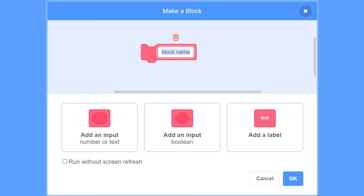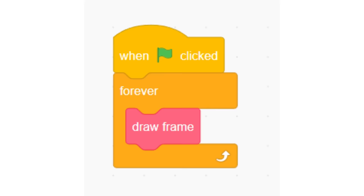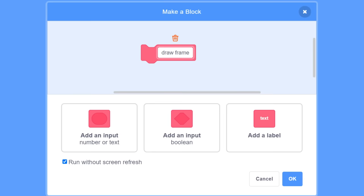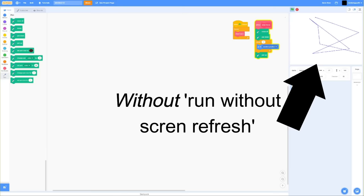The first thing I did was create a custom block called draw frame. This block will be called every frame and will be responsible for drawing the entire screen. I made sure to check the box labeled run without screen refresh. This box makes it so that when I use the custom block, it will do all the code under the block without updating the screen.